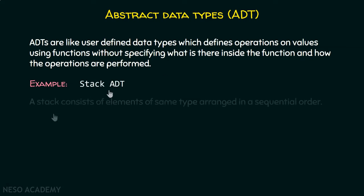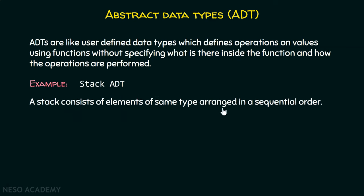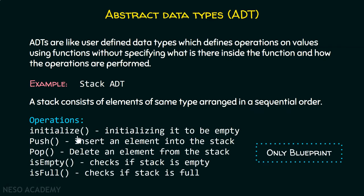Let's take an example of a stack ADT. A stack consists of elements of the same type arranged in sequential order. The operations allowed could be: initialize, which initializes the stack to empty; push, which inserts an element into the stack; pop, which deletes an element from the stack; check if the stack is empty; or check if the stack is full. These are functions, but we are not specifying how they can be implemented — we are just defining them. That is what is called an abstract data type.